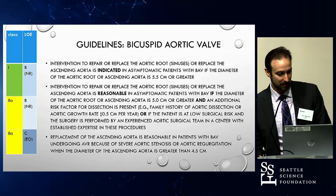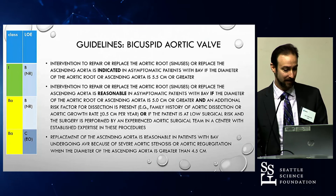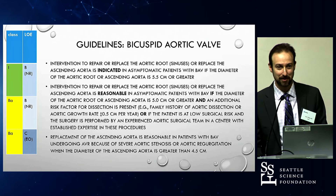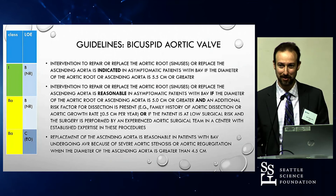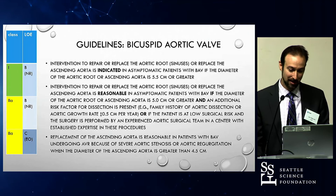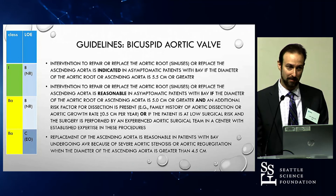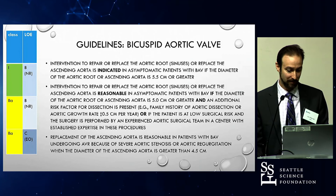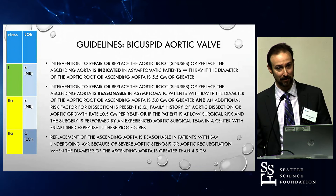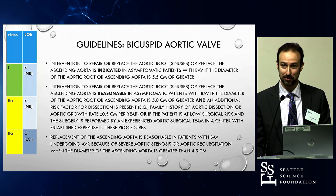The bicuspid valve guidelines were updated in 2015 because there was disagreement between the valve guidelines from 2014 and the aortic guidelines from 2010. An addendum was made to address when it's reasonable to repair, because in bicuspid valve disease you'll often have aortic stenosis or regurgitation involved. Depending on the size of the aneurysm of the ascending aorta when going for surgery, the question becomes whether to leave the aorta alone or just fix the valve — important decisions the surgeon and cardiologist need to discuss together.